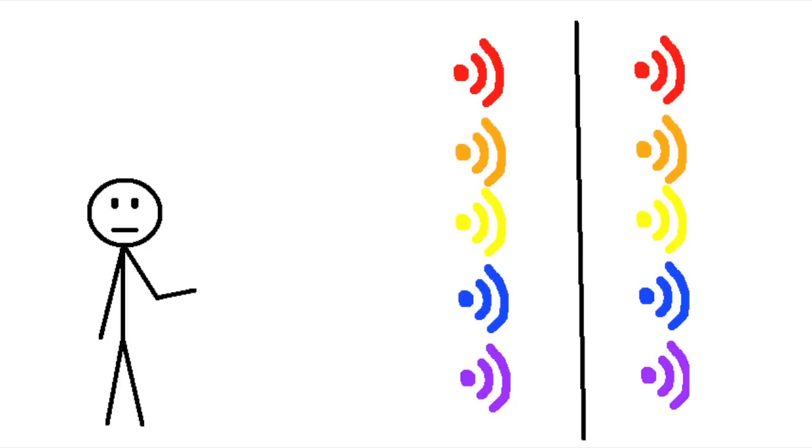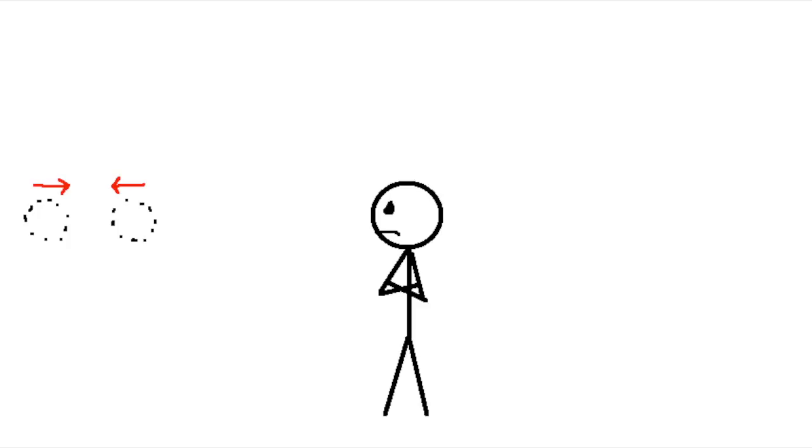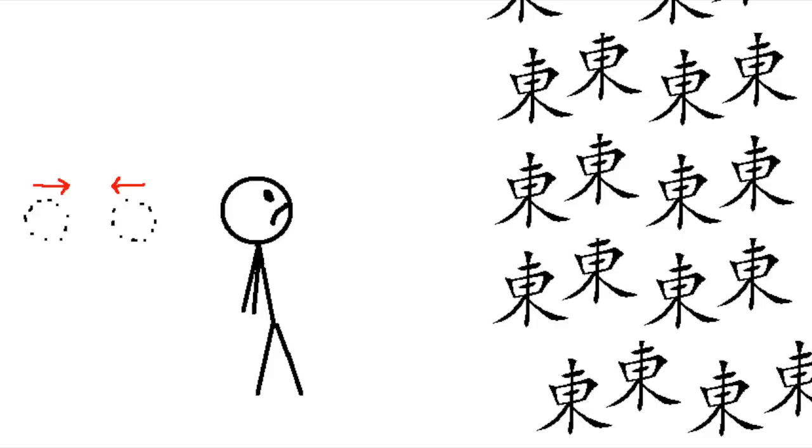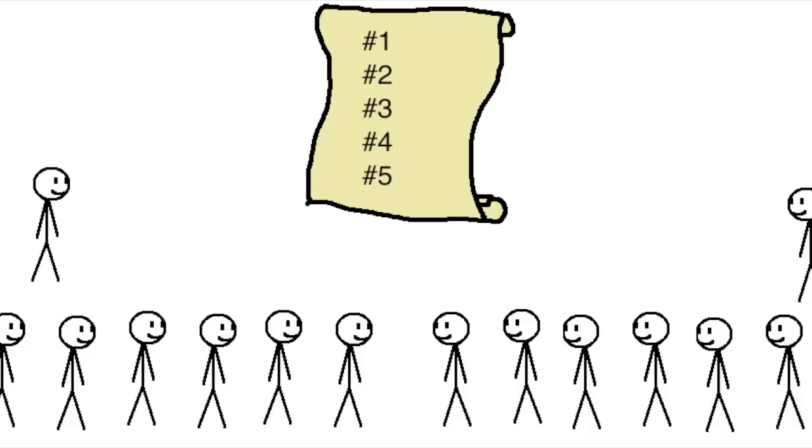This was especially the case when people would discover some new language that had two or three sets of every sound based on some small difference. When faced with a choice between adding one or two more diacritics to distinguish between the two sets, or doubling or tripling the number of letters in the entire alphabet, they tended to choose the former.